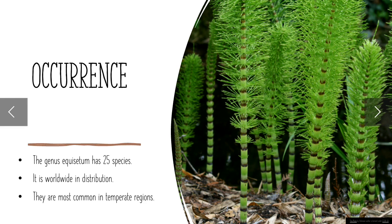Occurrence of Phenopsida: the genus Equisetum has twenty-five species. It is worldwide in distribution and they are most common in temperate regions.